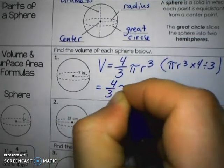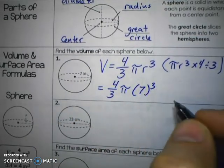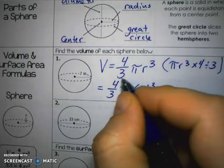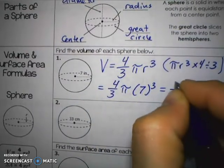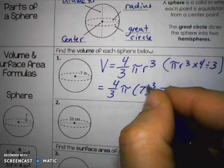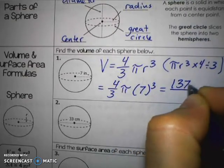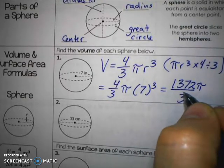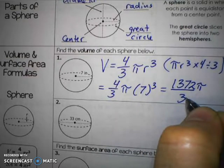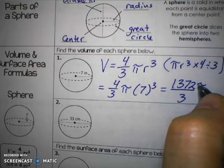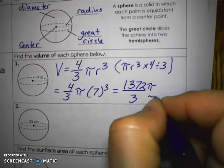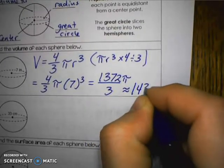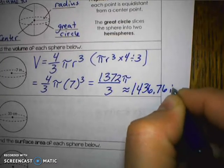We've got 4/3 π times the radius of 7 to the third power. I'm going to do 7 to the third power times 4 times π all on top of the fraction. When I do 7 to the third power times 4, I get 1,372 times π, divided by 3. Multiplying by π and dividing by 3, we get approximately 1,436.76 cubic inches.